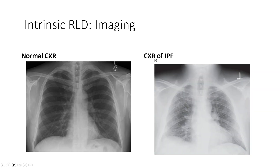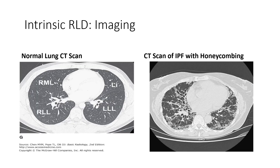On chest X-ray, a normal lung shows a sharp costophrenic angle and clear windows where you can count the ribs. In a patient with IPF, an intrinsic lung disease, we see diffuse opacities due to fibrotic changes — the lungs just look smaller. On CT scan, a healthy lung shows vasculature in the hilum, while a patient with IPF shows honeycombing, scarring, and fibrosis throughout. We can also often see cardiomegaly, likely due to right ventricular cardiomyopathy or dilation.